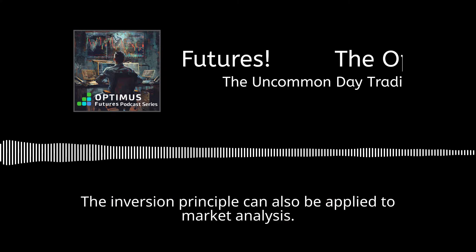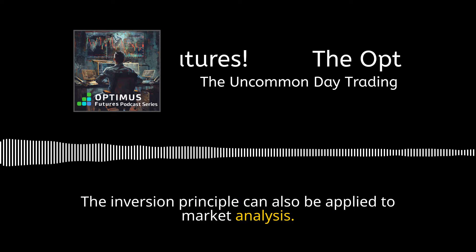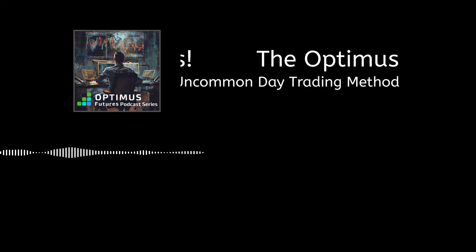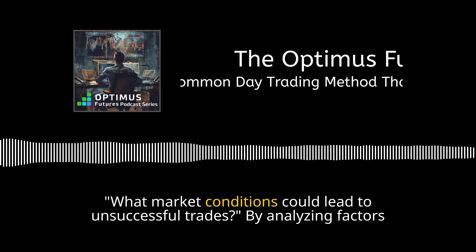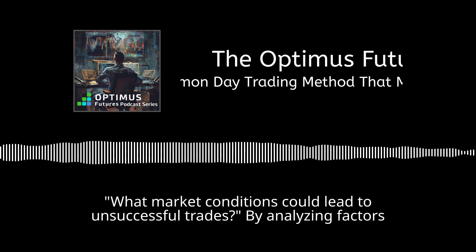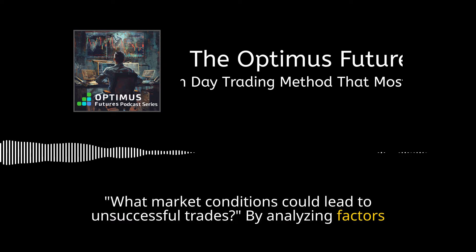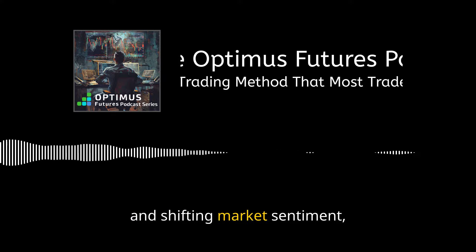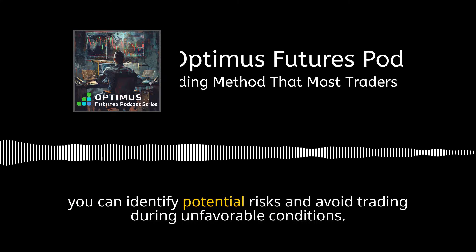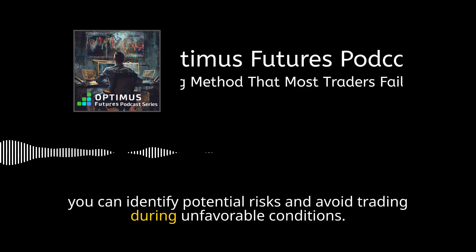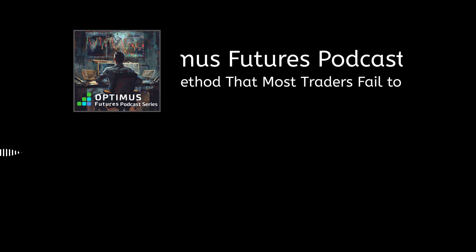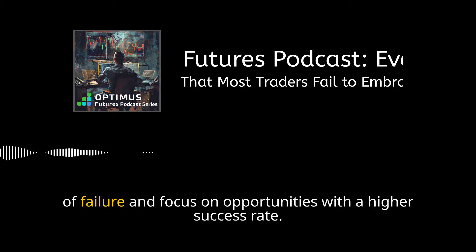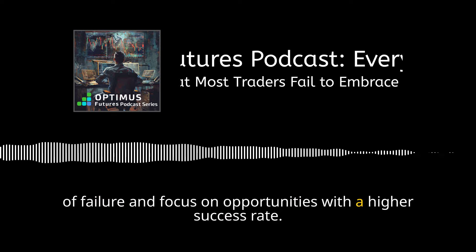The inversion principle can also be applied to market analysis. Instead of focusing solely on identifying profitable trading opportunities, consider asking, 'What market conditions could lead to unsuccessful trades?' By analyzing factors like market volatility, economic events, and shifting market sentiment, you can identify potential risks and avoid trading during unfavorable conditions. This approach can help you sidestep trades with a higher likelihood of failure and focus on opportunities with a higher success rate.